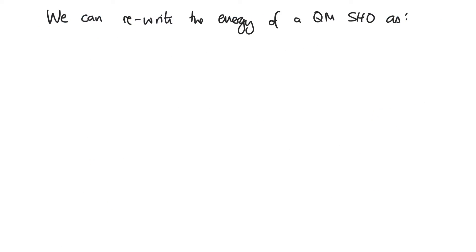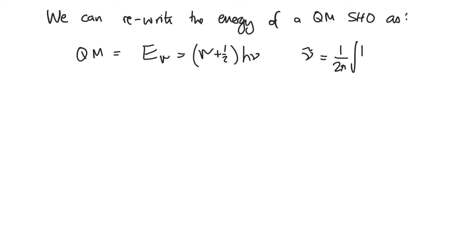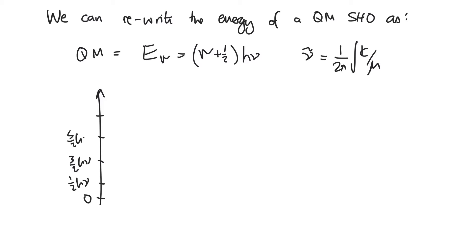That means we can rewrite the energy of a quantum mechanical simple harmonic oscillator. We derived that the energy depends on quantum number v and equals (v + 1/2) times h-nu, where nu is the fundamental vibrational frequency: 1 over (2 pi) times the square root of k over mu. This gives an energy diagram with equally spaced levels at one-half h-nu, three-halves, five-halves, and seven-halves, and so on.